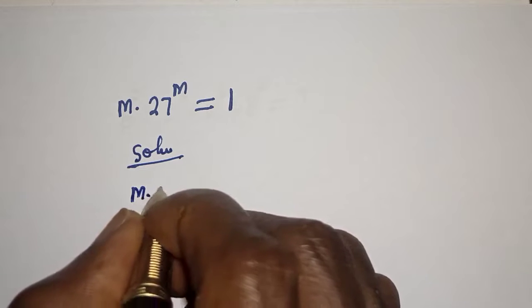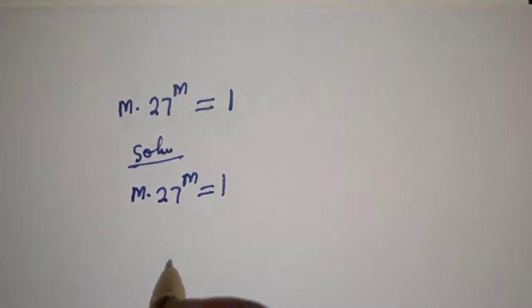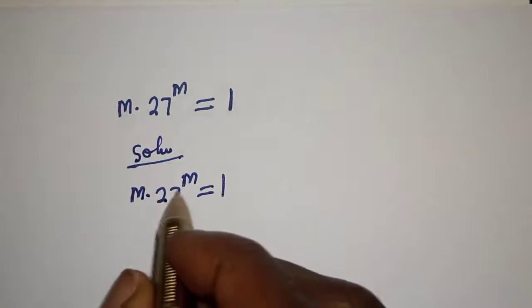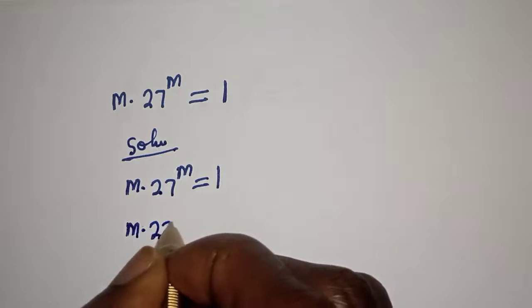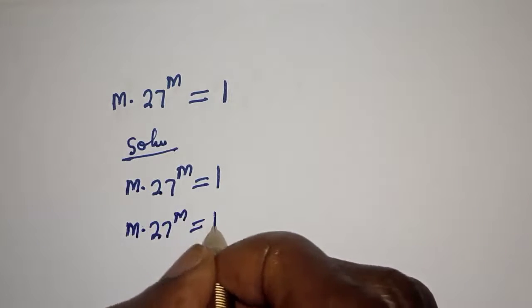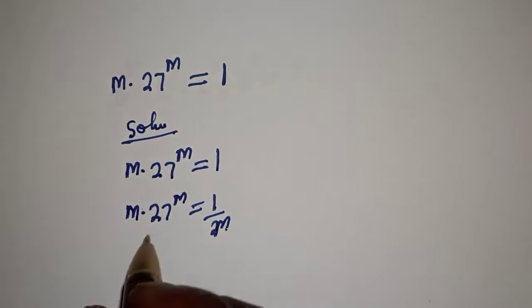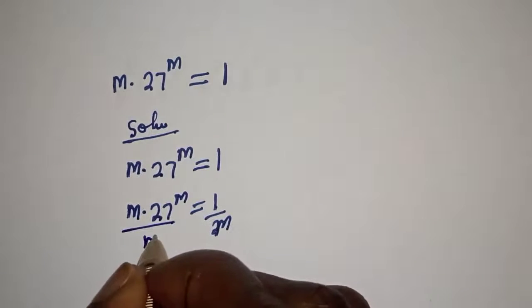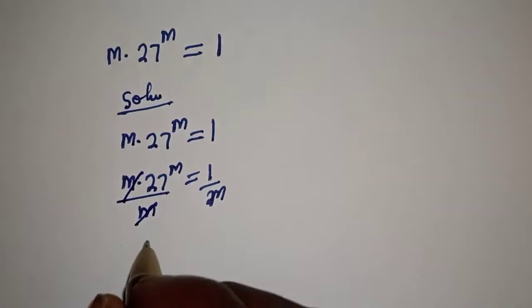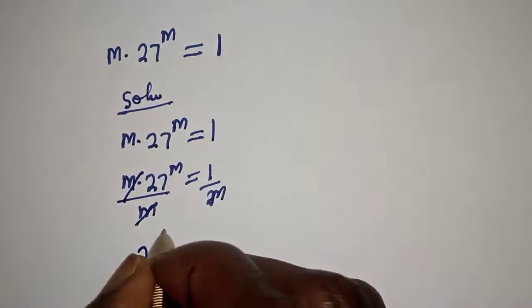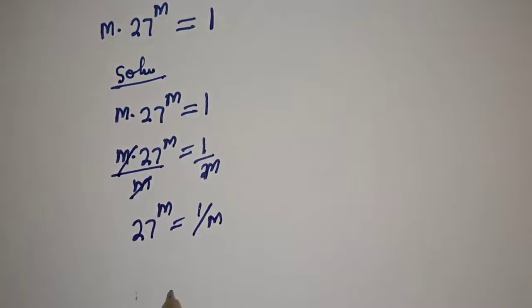m multiplied by 27 raised to power m is equal to 1. Let's divide both sides of this equation by m. So 27 raised to power m is equal to 1 over m.